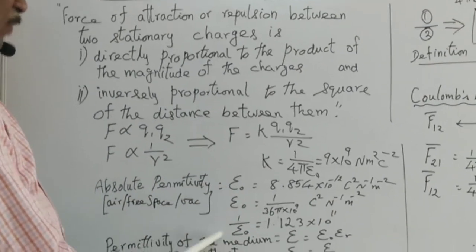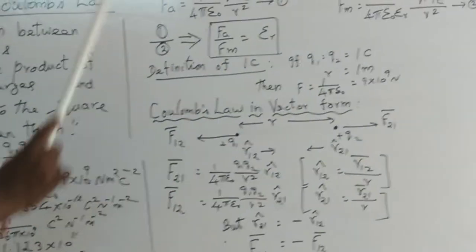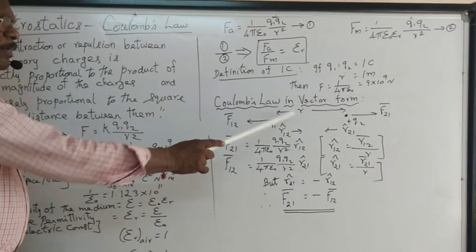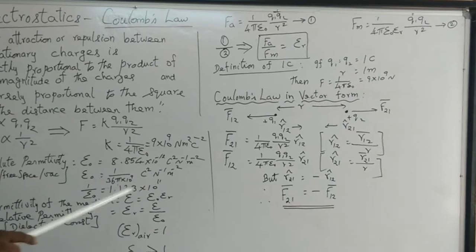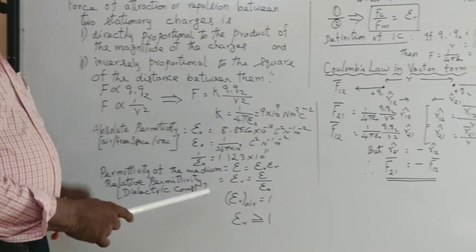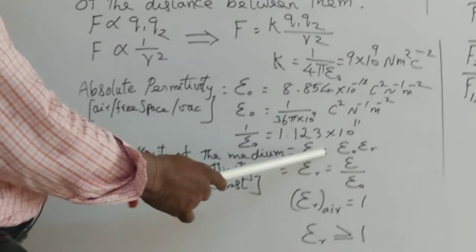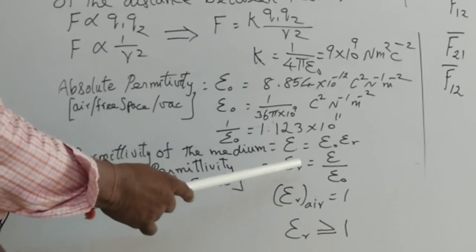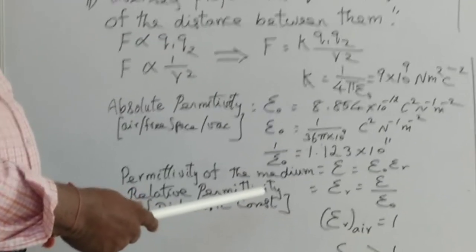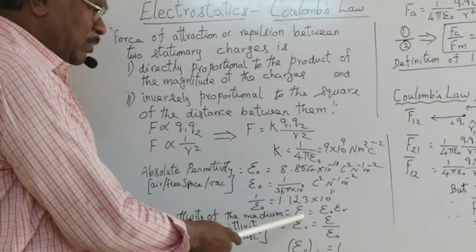Now, what about the permittivity of any medium? When both charges are placed in air or free space, it is the absolute permittivity. But medium plays a role in electrostatic force, so permittivity varies from medium to medium. When both charges are placed in a medium, the permittivity is given by epsilon (ε). Physical constant tables do not contain the permittivity of any medium directly — instead, relative permittivity is given in data books for all materials.